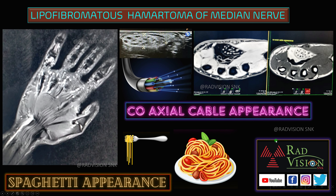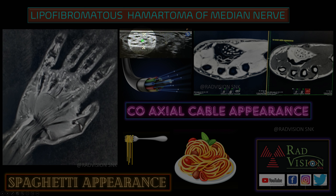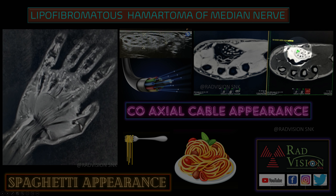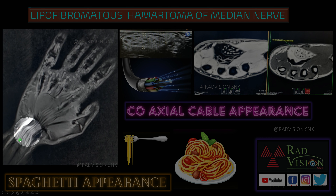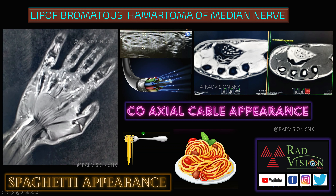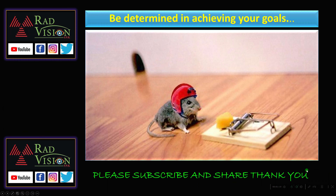In summary, this is the classical case. Whenever you see enlargement of the median nerve at the level of the palmar aspect under the carpal tunnel, with multiple hypoechoic nerve fascicles surrounded by fatty tissue on ultrasound, and on MRI axial sections multiple hypointense nerve fascicles surrounded by fatty tissue giving the coaxial cable appearance, and on coronal or sagittal sections the nerve fascicles mimic a spaghetti-type appearance - definitely suspect lipofibromata hamartoma of the median nerve. Thank you all.